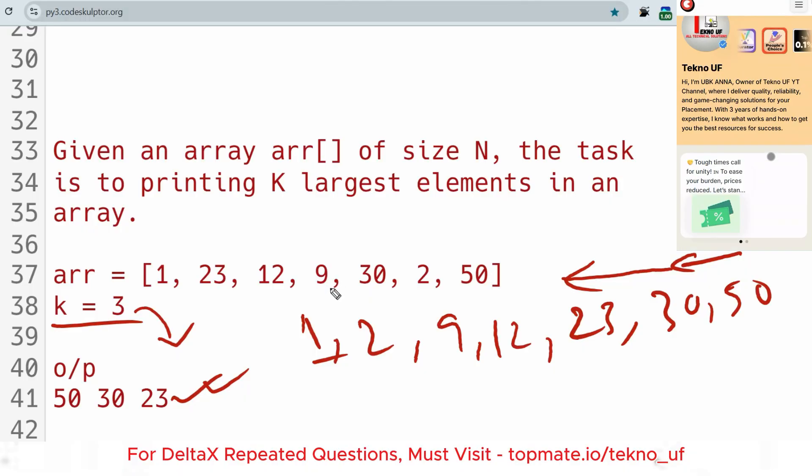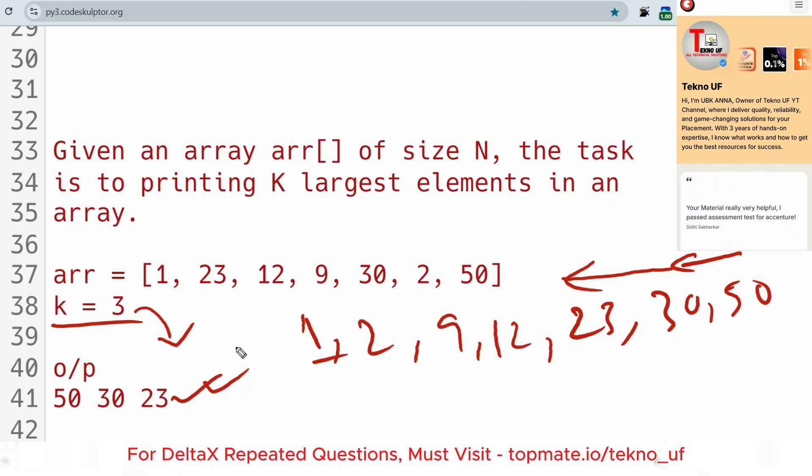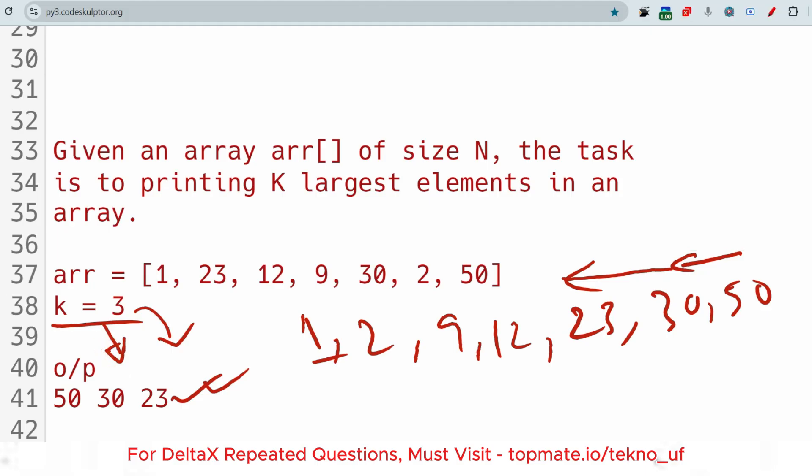Then you have to implement a for loop to print the K largest values from the array. Let me show you the solution. If you can solve the problem, give the solution in Python, Java, or C++ in any preferred language in the comment section. I'll give you a heart and share your name in the next video.